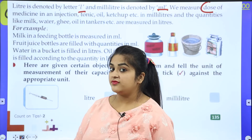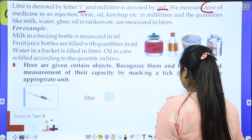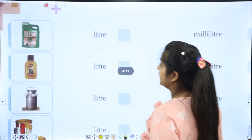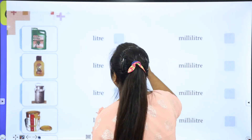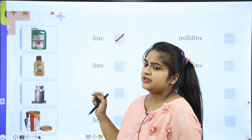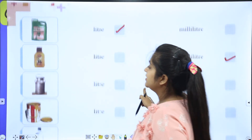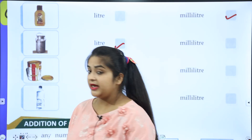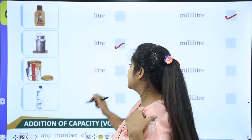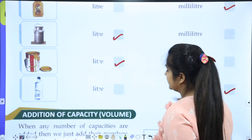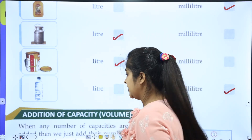So, an injection — what will it be? Milliliters. And oil in a large container — what will it be? Liters. Oil in a small quantity — milliliters. Milk is more in quantity, so it is measured in liters. A paint box — liters. A small water bottle — milliliters.